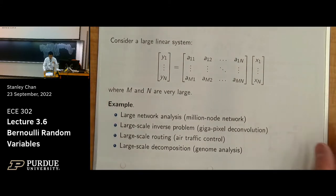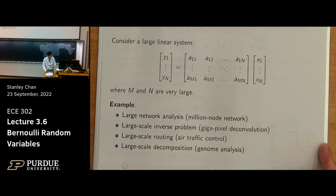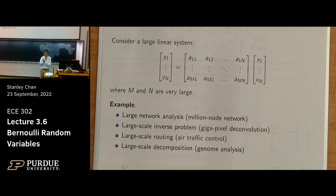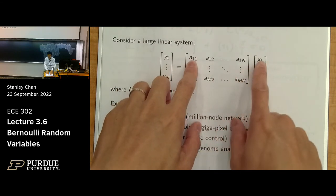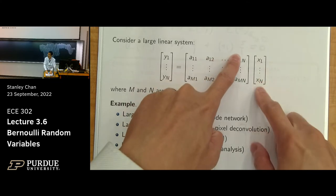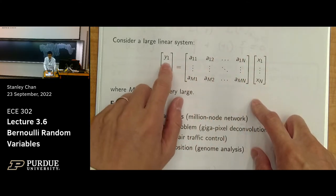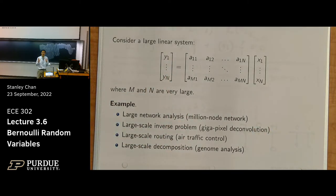Now let's talk about some very interesting applications. The first application involves large-scale linear systems. Consider the scenario: you have a vector and a matrix. The matrix-vector multiplication y = Ax is computed by taking inner products of each row with the column vector. This system of linear equations is very common — I would say 90% of engineering problems are formulated according to this form. Most nonlinear problems are approximated and turned into this linear form, because nonlinear problems are too difficult to solve directly.